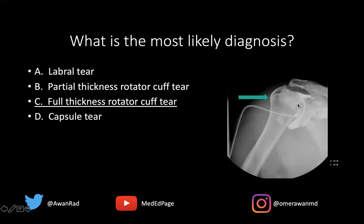A labral tear would be very difficult to diagnose on a fluoroscopic image — MRI would be more telling. The labrum is a 360-degree structure that encompasses the entire glenoid. We would expect contrast to be here or here, but certainly not out in the subacromial region.